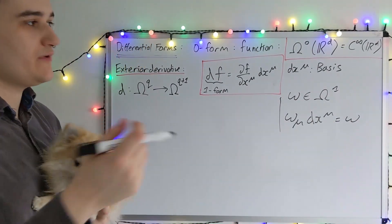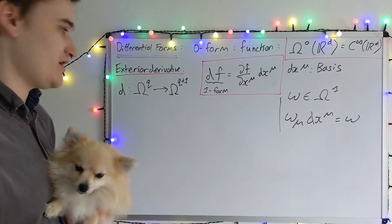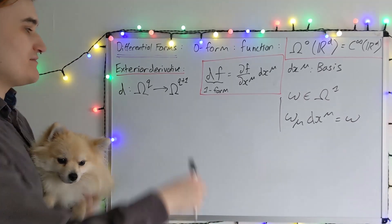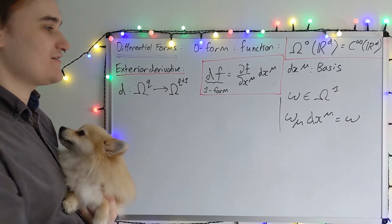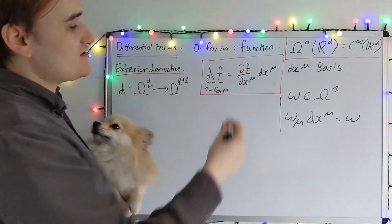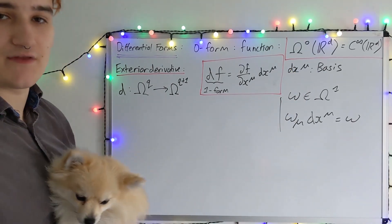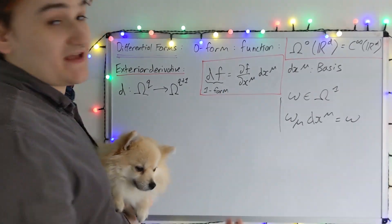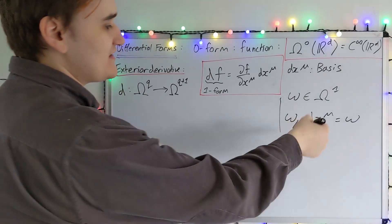Okay, so really quick recap then. We began by identifying or just defining that zero forms are functions on R^d, smooth functions on R^d. I then introduced a new bit of machinery, which is known as the exterior derivative, which we said was a map from q forms into q plus one forms. And I then showed you how this exterior derivative acting on a zero function produces a one form. And we were able to identify from the definition of the exterior derivative that these dx mu objects are the exterior derivative acting on the coordinate functions. And these are forming the basis of our space of one forms. So then any one form in the space can be expressed as an arbitrary linear combination of these basis one forms.